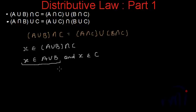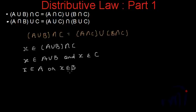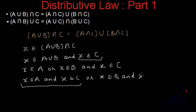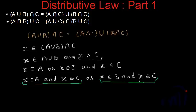This part says X is an element of A union B, which means X is either an element of A or X is an element of B. If X is there in either of A or B, it will definitely be there in their union. And X is there in C. So from here we can say that X is an element of A and X is an element of C, or X is an element of B and X is an element of C — one of these conditions must be true because X is either in A or B, or both.